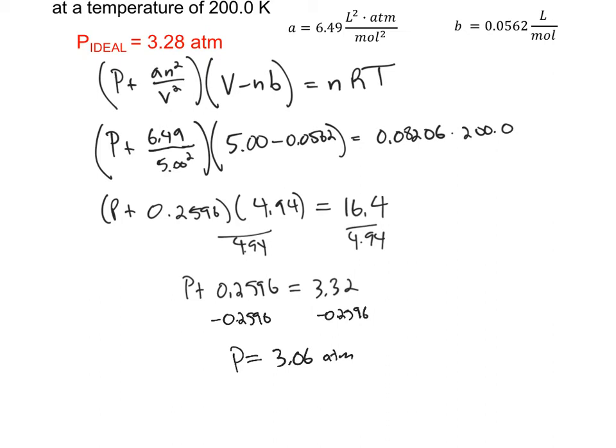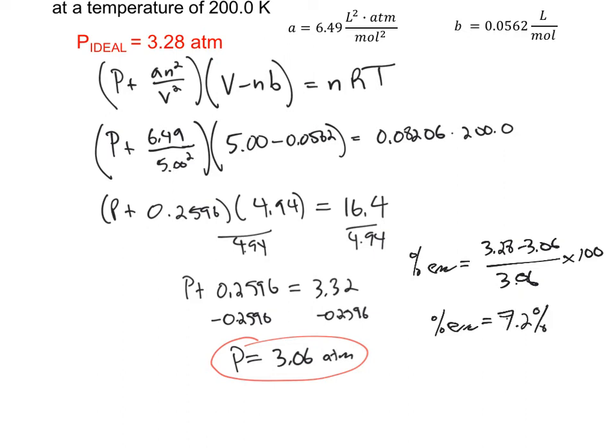So this we would expect to be the more accurate result, and that compares not terribly unfavorably with the ideal gas law. If we wanted to, we could calculate the percent error. So 3.28 minus 3.06, we assume that the van der Waals equation is giving us the more accurate result, so that's what we'll use as our denominator. And so I get a percent error of 7.2%.